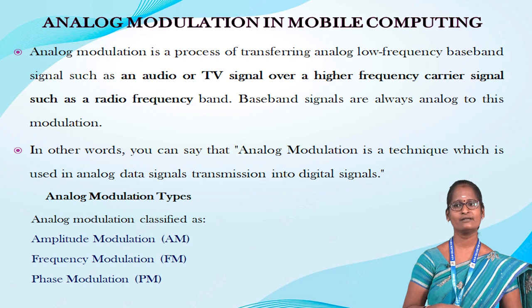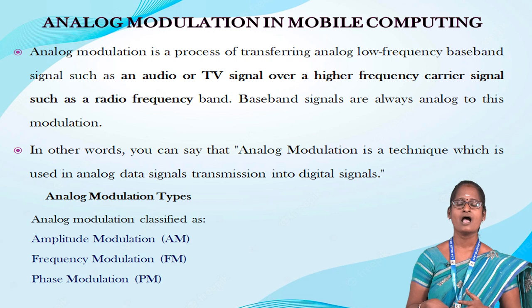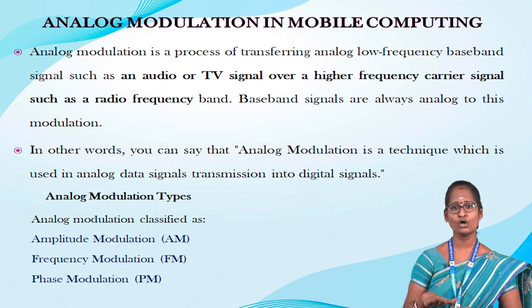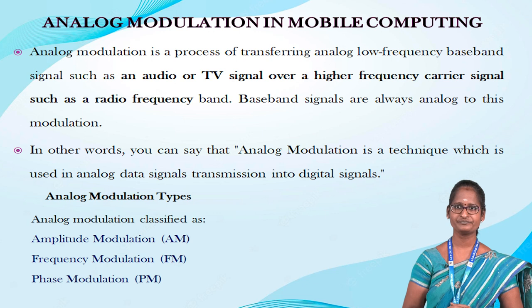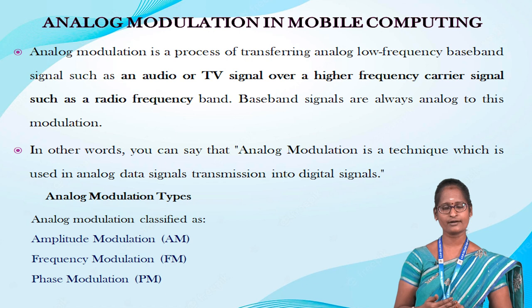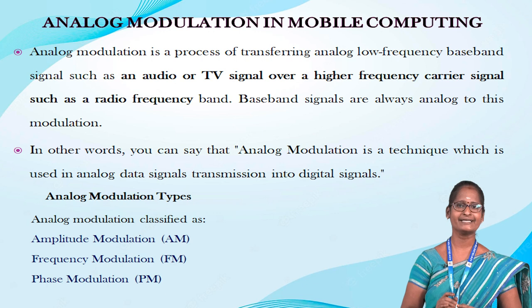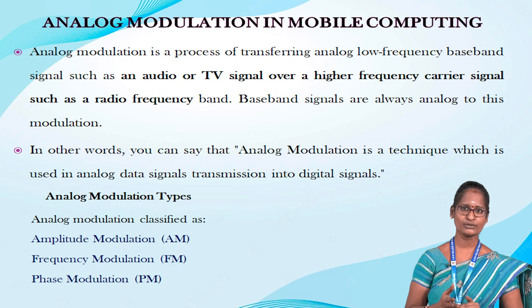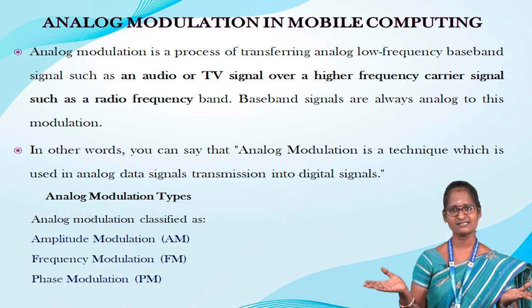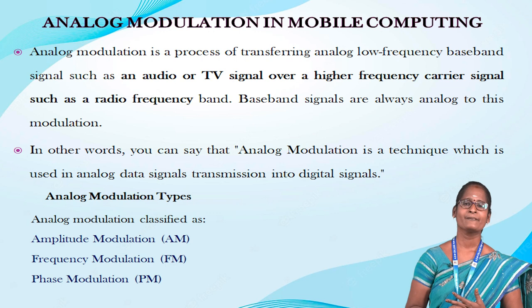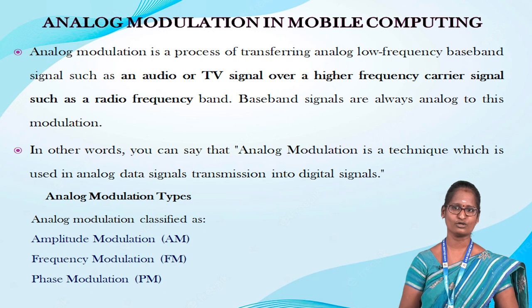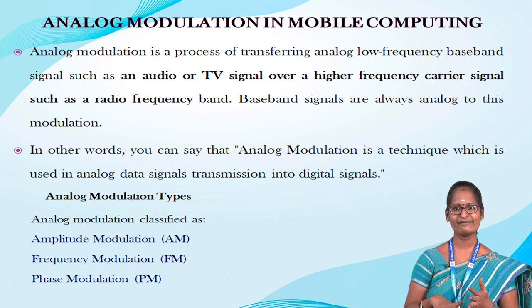Analog modulation in mobile computing is the second type of modulation. Analog modulation is a process of transferring an analog low frequency baseband signal, such as an audio or TV signal, over a frequency band. Baseband signals are always analog in this modulation. Analog modulation is a technique used with analog data for signal transmission. An example of analog modulation is broadband signals. There are three types of carrier signals in analog modulation: amplitude modulation, frequency modulation, and phase modulation — classified as AM, FM, and PM.